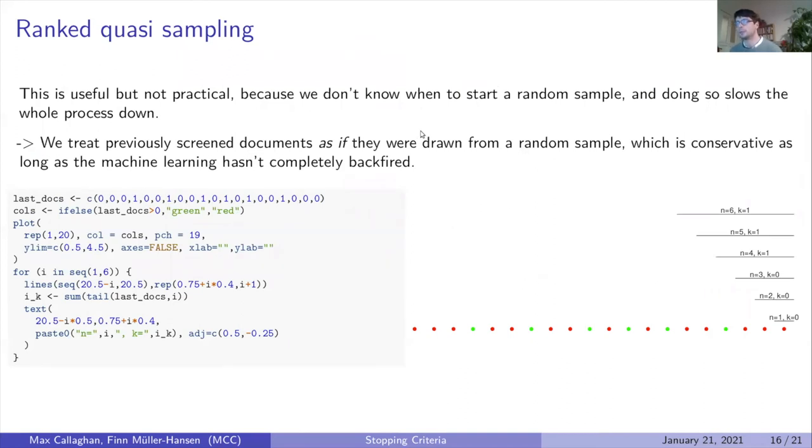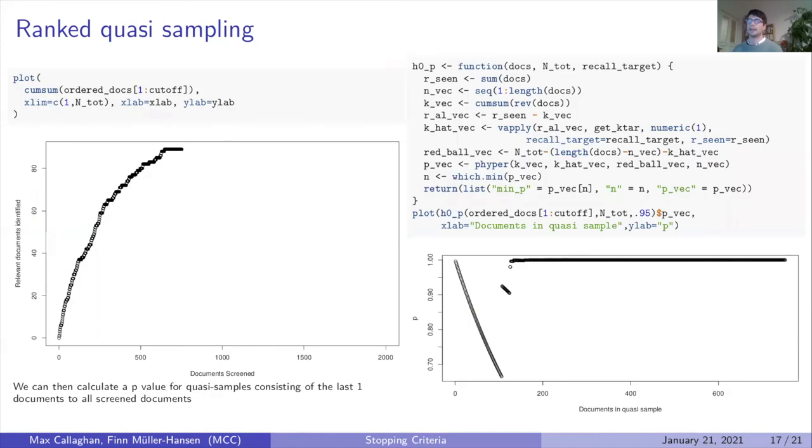But that's not so useful because we don't want to start a random sample. What we can do is treat the previously screened documents as if they were drawn from a random sample. This is a conservative assumption as long as the machine learning hasn't completely backfired. So we take the last one, the last two, the last three, etc. documents and calculate the p-value for as if we had started a random sample here, here, here and here. Here are the different p-values we can calculate for all of the different subsets of previously screened documents from this point. You can see that at no point is the p-value low enough to reject the null hypothesis.